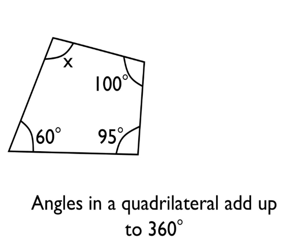Let's see how we can use this angle fact — angles in a quadrilateral add up to 360 degrees — to solve an angle problem. Here I've got an irregular quadrilateral, and this angle rule works for whatever quadrilateral you can think of. This irregular quadrilateral has interior angles of 60 degrees, 95 degrees, and 100 degrees, plus another angle x which we don't know yet, and we're going to use the angle rule to calculate it.